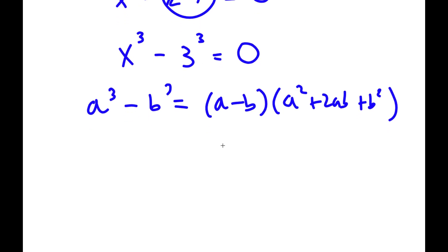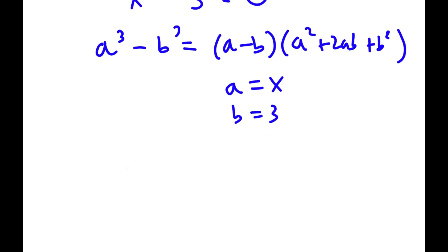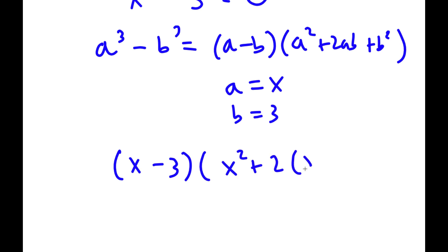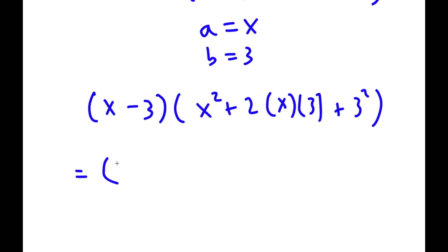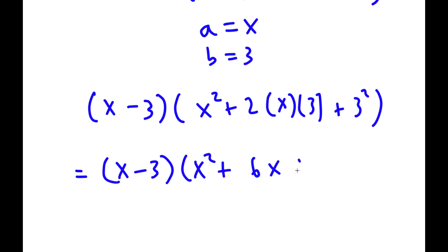So in this case, a is equal to x and b is equal to 3. So now I have x minus 3 times x squared plus 2 times x times 3 plus 3 squared. This simplifies to x minus 3 times x squared plus 6x plus 9. And remember, this is all equal to 0.